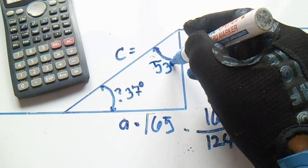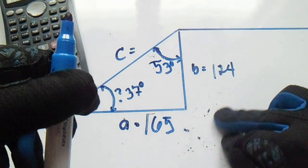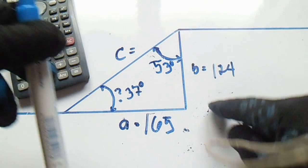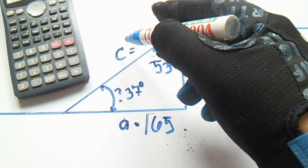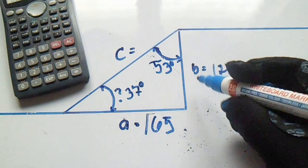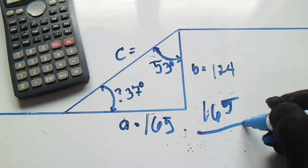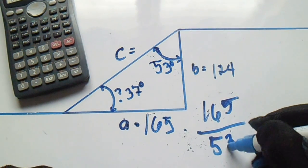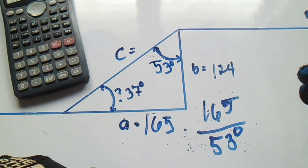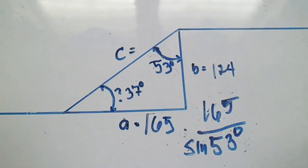Okay, now next we will find this C. So from this C, just divide 165 to 53 degrees. Okay.